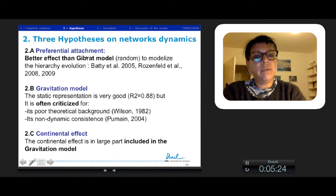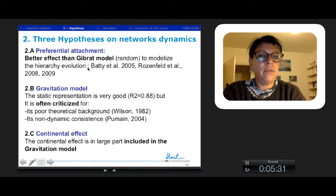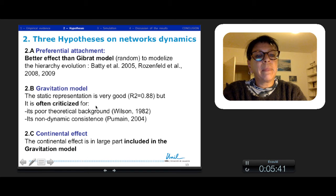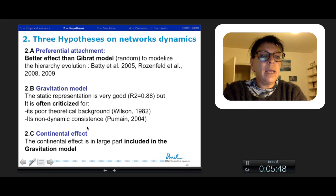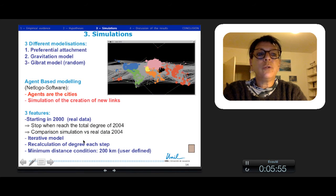We made three hypotheses on preferential attachment, which is a better effect than Gibrat model, which is only random, to model the hierarchy evolution. The gravitation model presents a very good adjustment, but it is criticized because it is non-dynamic and poor theoretically. Continental effect, we suppose, is included in the gravitation model.